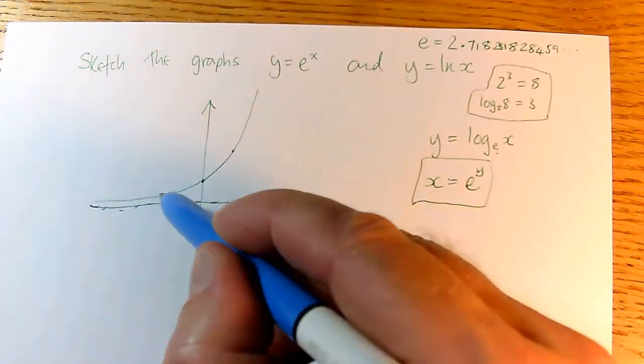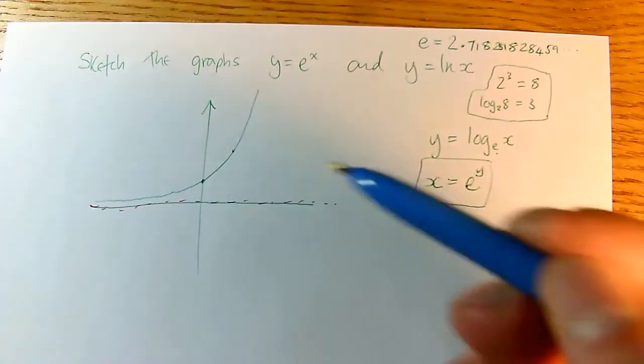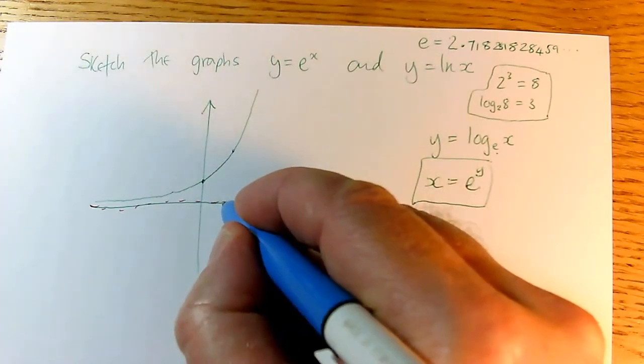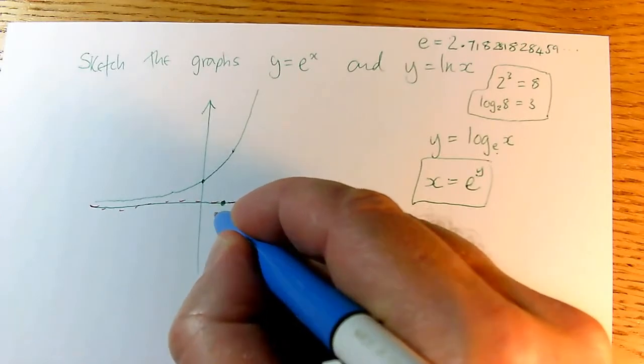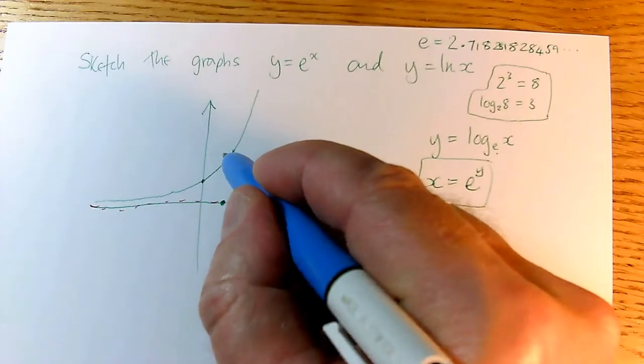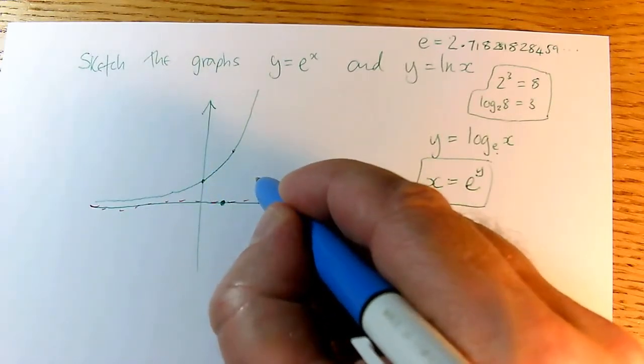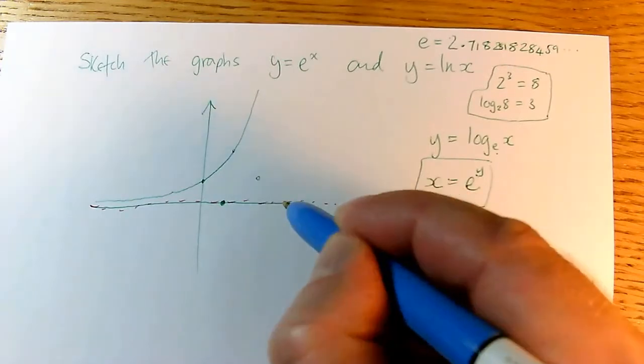So for every point on the original graph, I'm going to get a similar point. So this is the point 0, 1. On the log graph, I'm going to get the point 1, 0, because x and y swap around. So this would be the point with x coordinate 1 and y coordinate e. Well, I'm going to get the opposite of that. I'm going to get x coordinate of e and y coordinate of 1 here on this graph.